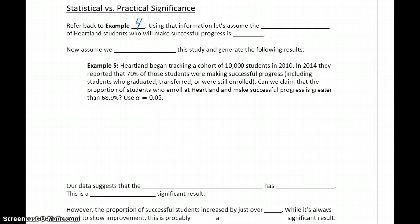So if we refer back to example four, the information we had on Heartland students making successful progress, let's take that information and assume that the population proportion of students who will make successful progress is exactly 68.9%. So even though that was just sample data, let's just for a moment assume that that's the true population proportion.